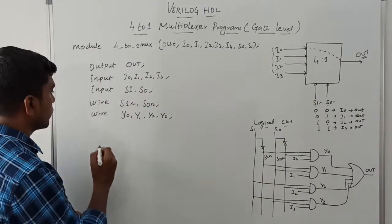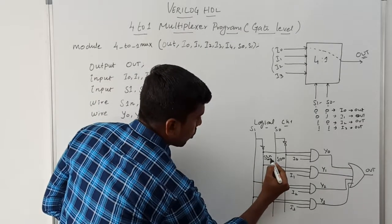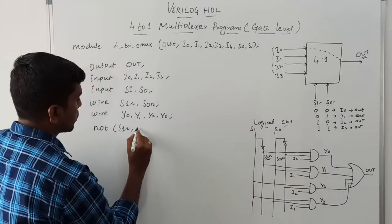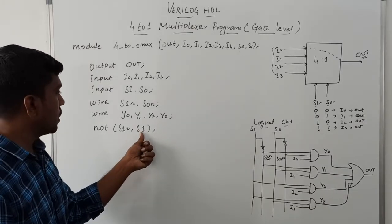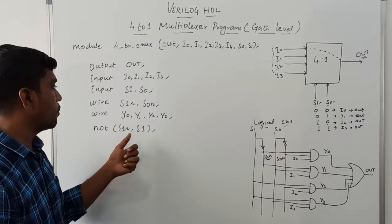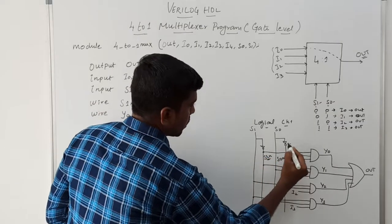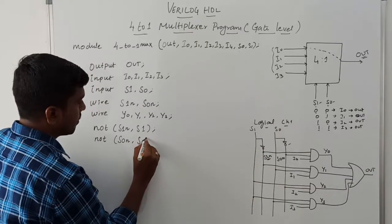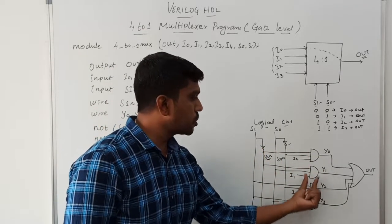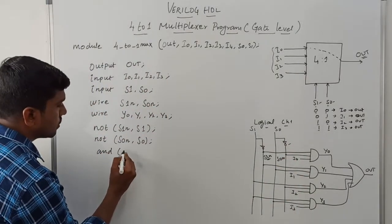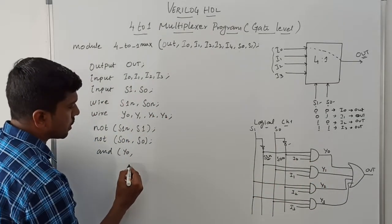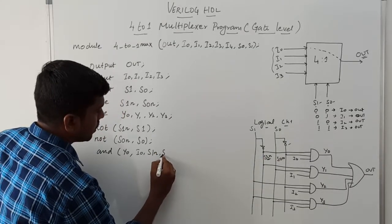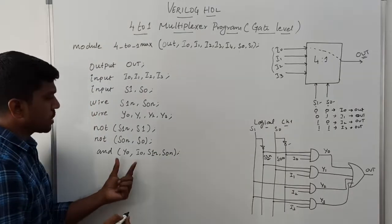First, take the first NOT gate. In gate declaration, first you represent the output signal, then the input signal. So: 'not(S1_N, S1)' — the input signal is S1 and the output of the NOT gate is the complement of S1, which is S1_N. Then the second NOT gate: 'not(S0_N, S0)'. The two NOT gate declarations are complete. Then take the first AND gate: 'and(Y0, I0, S1_N, S0_N)'.